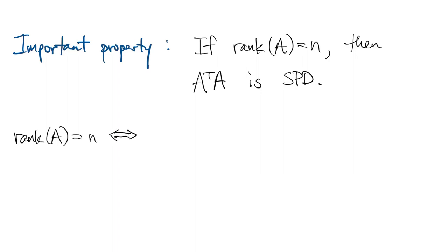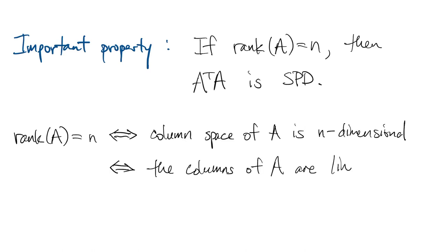Now, in case you don't know or you've forgotten, rank A equals n means that the column space of A is n-dimensional. Or another way of looking at it is that those column vectors are linearly independent. It's something like non-singularity for a rectangular matrix.